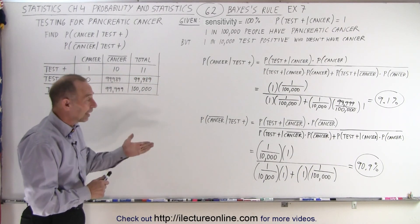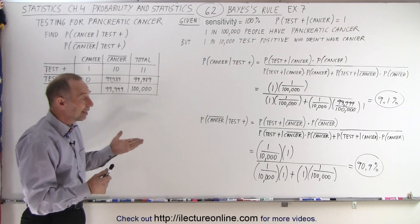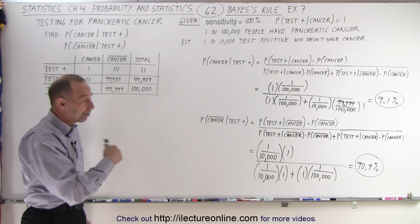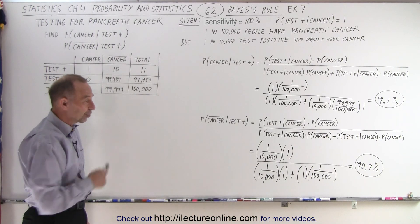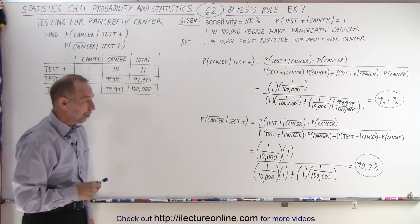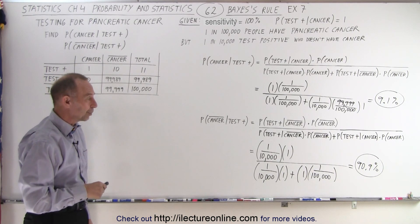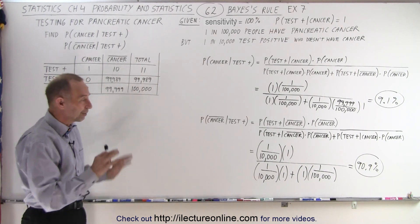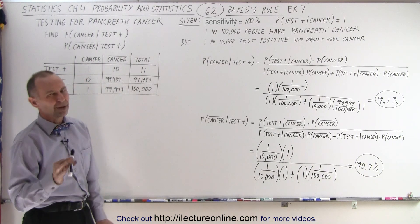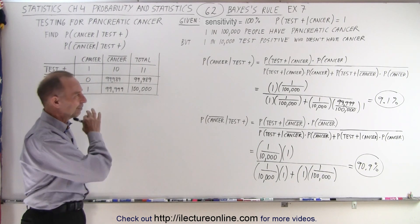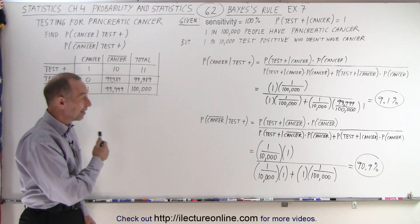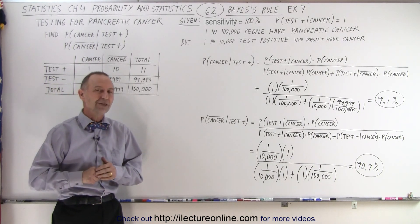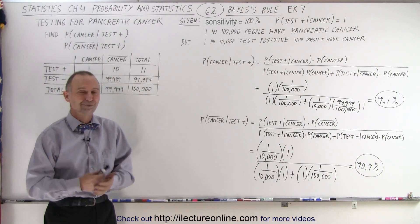So let's say you go in and get this test taken and you test positive — there's about a 91% chance you don't have cancer and about a 9% chance that you do have cancer. That's a pretty good test. You'll have to do some more testing to make sure you don't start operating on people who don't have cancer who tested positive. But of course that's for the medical field, not the mathematical field. That is how it's done using Bayes' theorem or Bayes' rule.